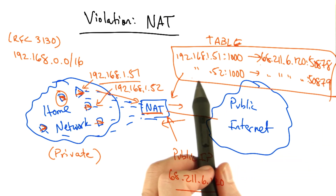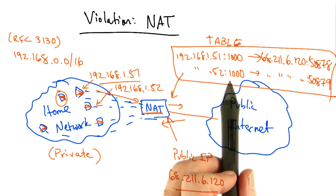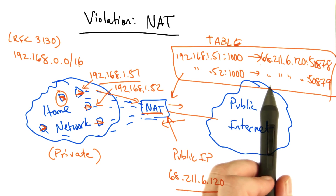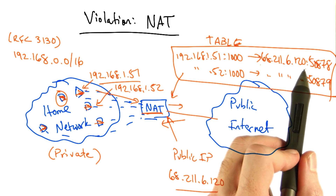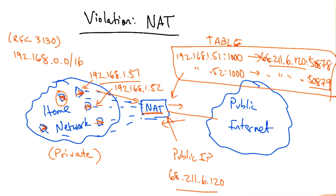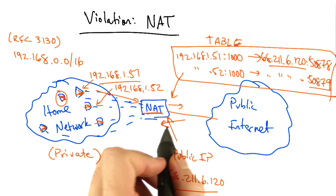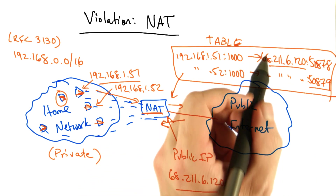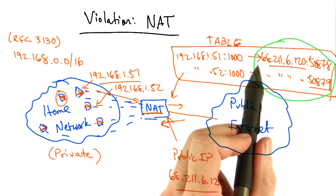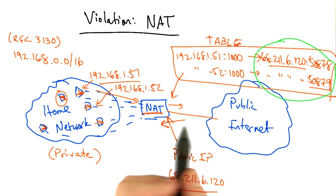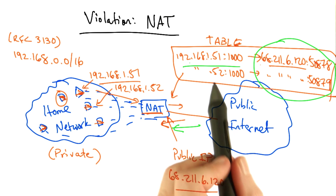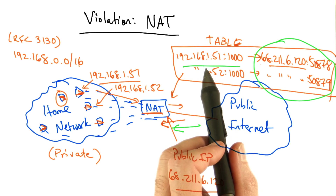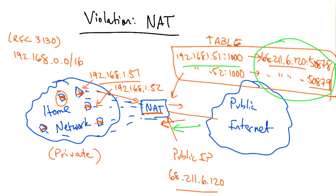Similarly, packets with a source IP address of 192.168.1.52 and source port 1000 should be rewritten to the public IP address and source port 50879. Then when traffic returns to the NAT, the NAT knows that it needs to rewrite the destination address on the return traffic to the appropriate destination IP address and port in the private network.